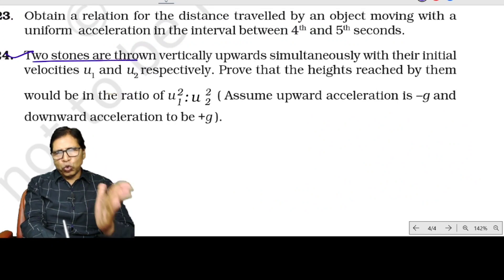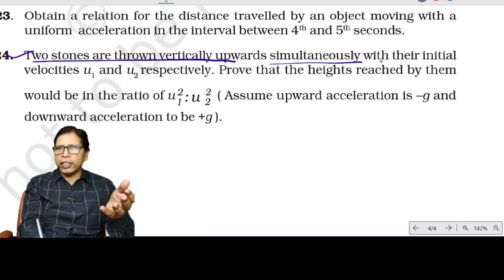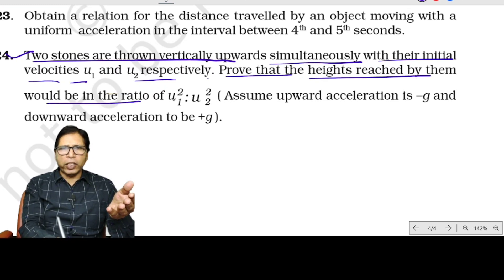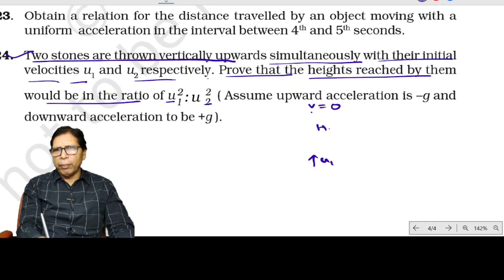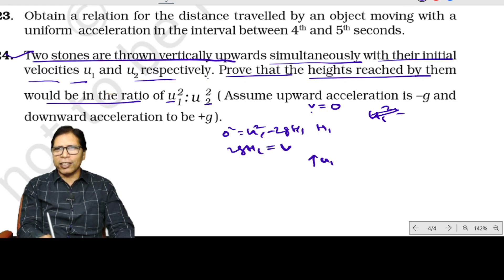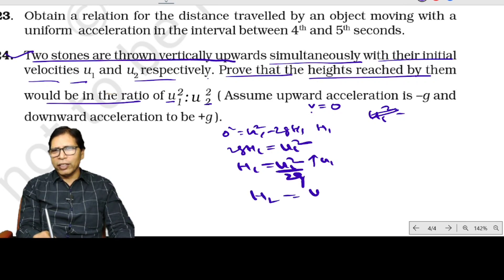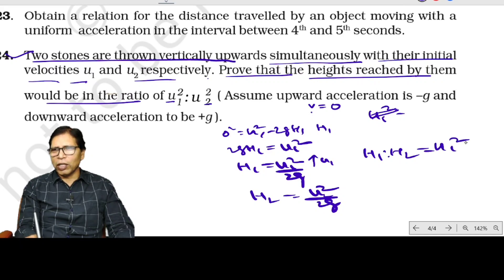Question number 24: two stones are thrown vertically upward with initial velocities u₁ and u₂ respectively. Prove that the heights reached are in the ratio u₁²:u₂². At maximum height, v=0. So 0 = u₁² − 2gh₁, giving h₁ = u₁²/2g. Similarly h₂ = u₂²/2g. Therefore h₁:h₂ = u₁²:u₂².